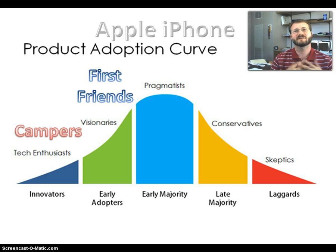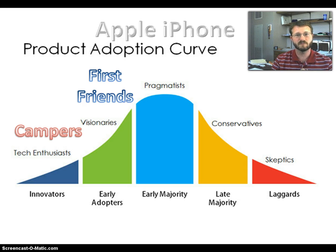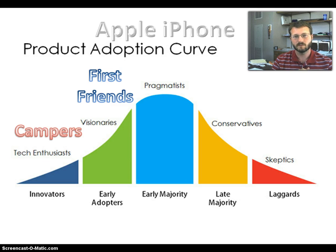After the innovators, I call them the first friends. These are people that probably went that first day, but they weren't dedicated enough to go camping. They're also going to be people that do pre-orders and have it shipped to their house as soon as possible. When you're in their circle of friends, peers, or family, they're the first people that have the new toys, the shiny new gadgets, and everybody asks them: what do you think of it? Is it as good as they say? They're your first friends, and they're a large part of the early adopting group.